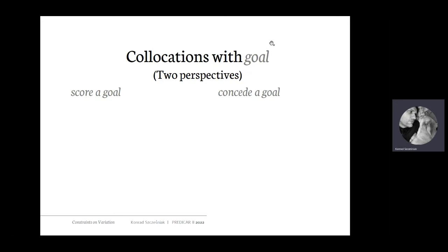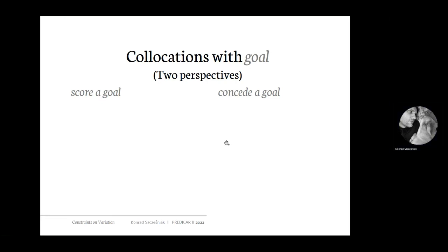A goal is the event when one team places the ball in the opponent's goal. You can look at this event from two different perspectives: from the perspective of the striker who scores a goal, or from the perspective of the goalkeeper who concedes a goal. I need to stress that these are not typical examples of synonyms or true synonyms — these are special cases of synonymy known as converses. They describe the same situation but from two different perspectives.